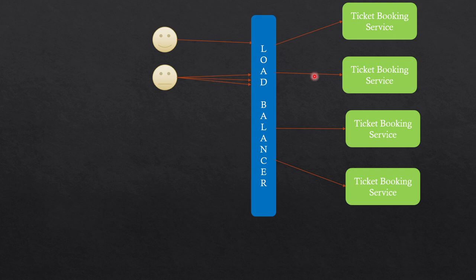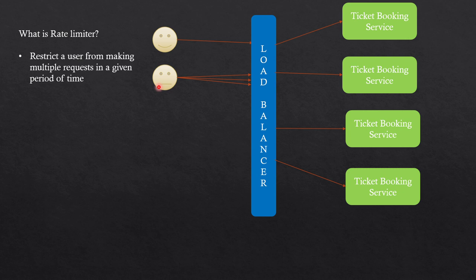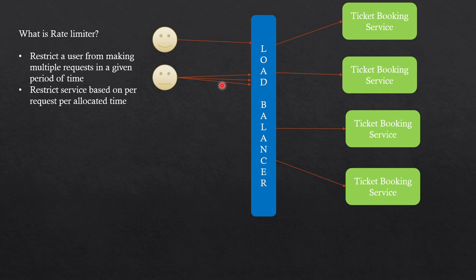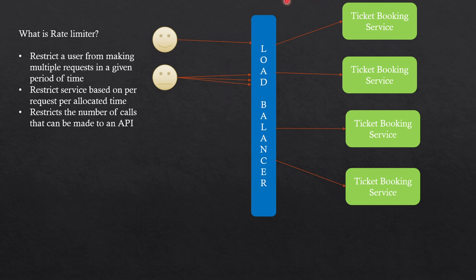That is not good for our booking service. This is one of the cases where we use a rate limiter. A rate limiter restricts a user from making multiple requests in a given period of time — for example, it tells the user they can make only five requests in one hour. It restricts the number of calls that can be made to an API and will fail all requests beyond the allocated limit.